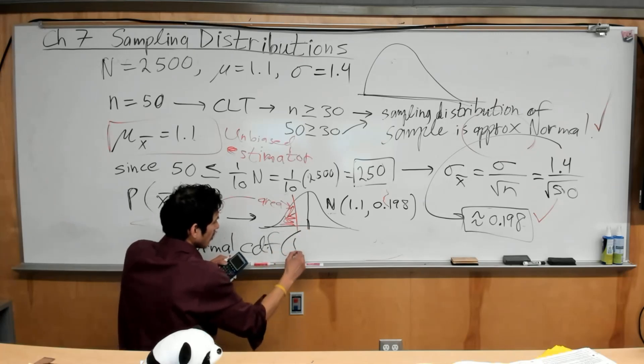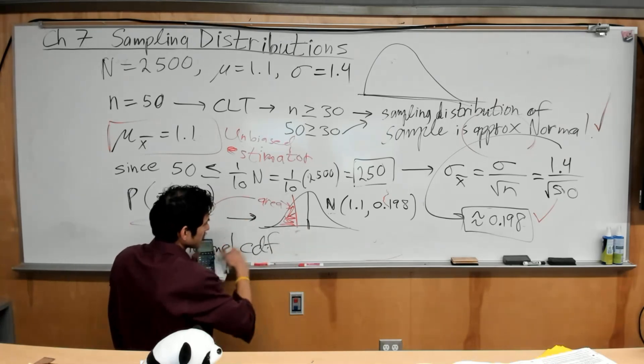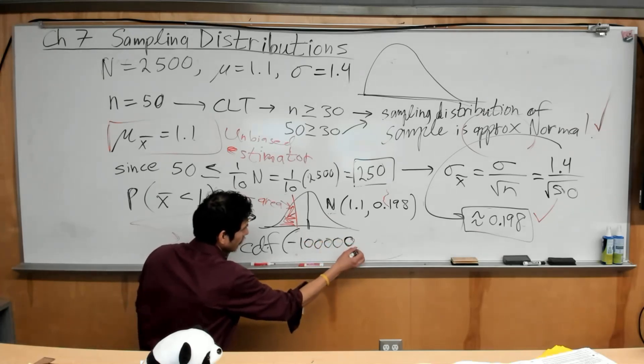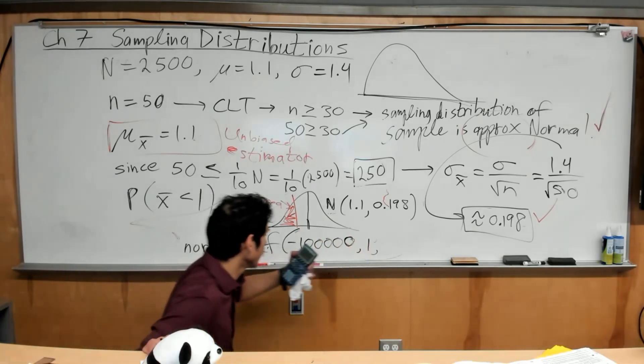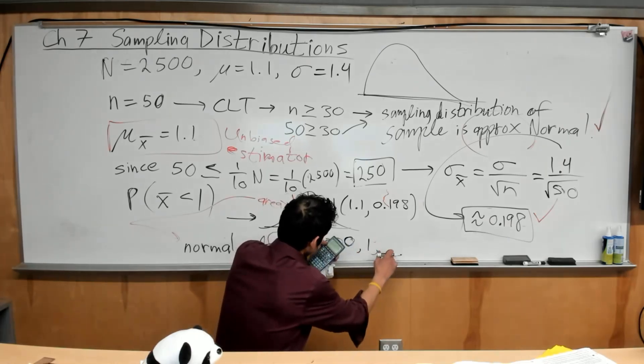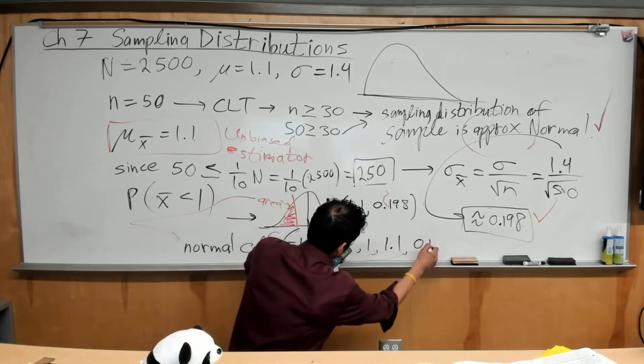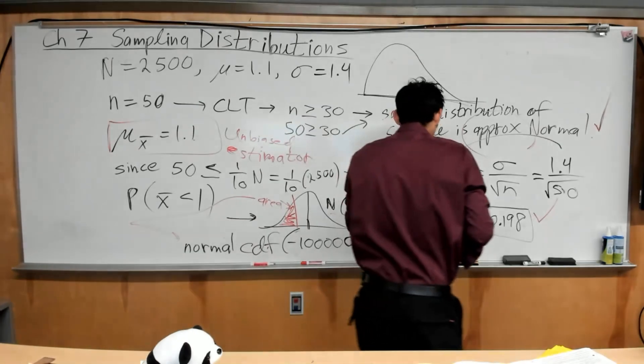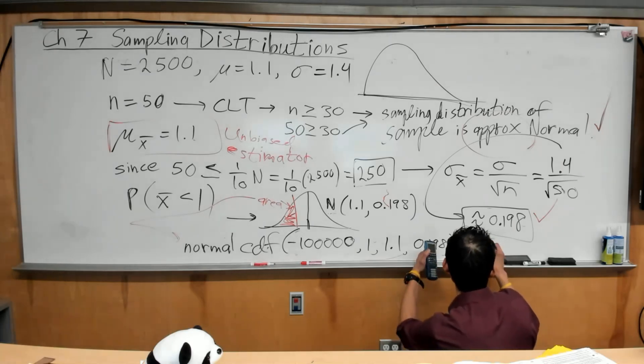So if you have the old school one like me, the syntax would just be parentheses, lower bound, so like negative a billion, comma, upper bound, which is going to be just 1. And you can go ahead and enter the mean and standard deviation. The mean is going to be 1.1, comma, 0.198. And it will give you about 0.31, 0.30676.